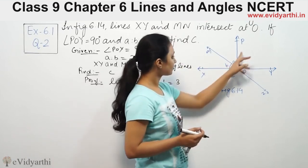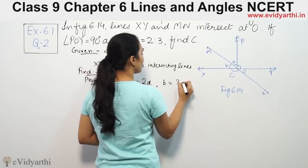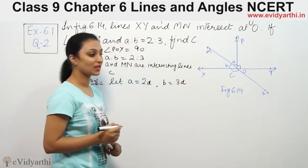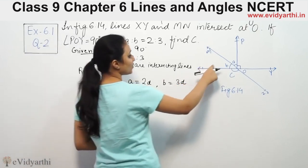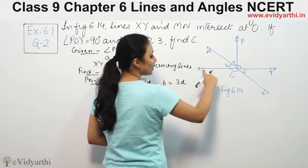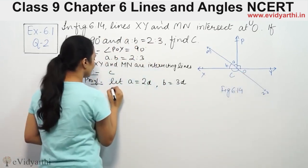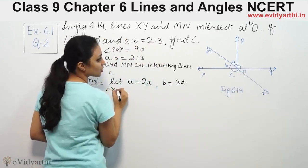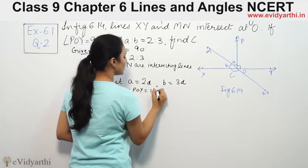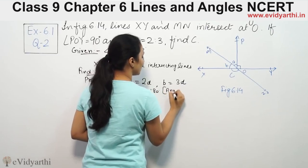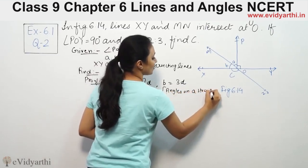So here we can take a = 2d and b = 3d. Since a:b = 2:3, we let a = 2d and b = 3d. We apply the straight line property: angle XOP + angle POY = 180°, because angles on a straight line sum to 180°.